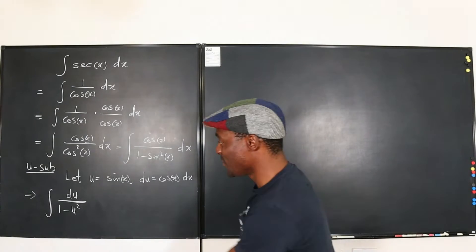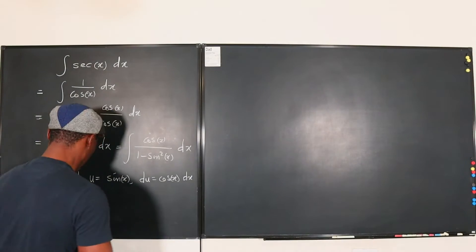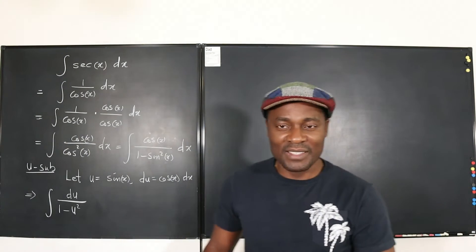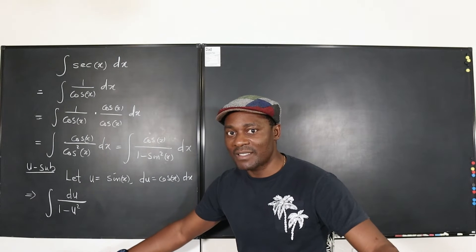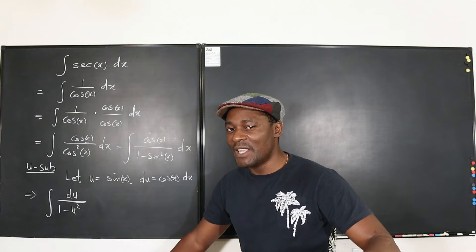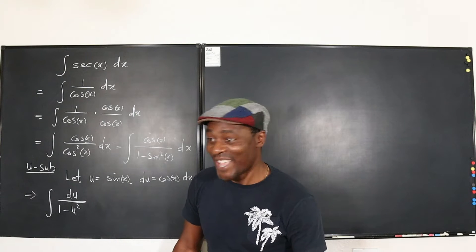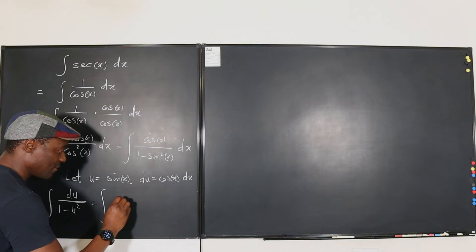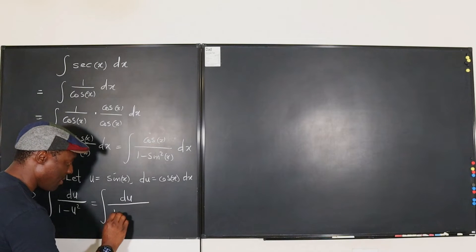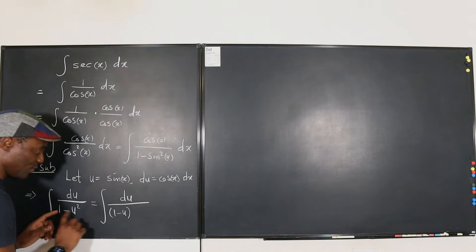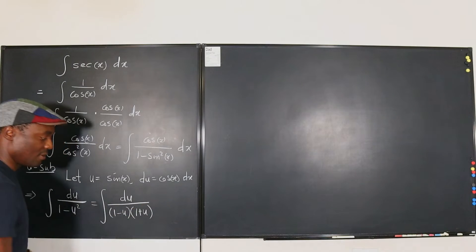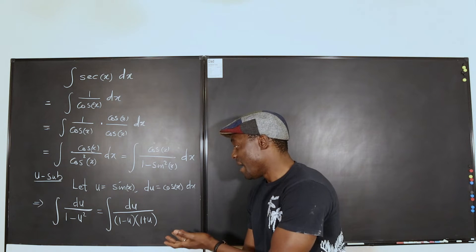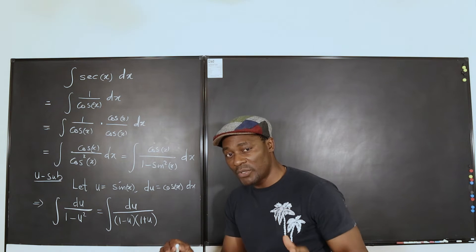Now it's getting easier. With this expression, when you see something like this, can you factor the denominator? Yes. If you can factor the denominator, you might need to do partial fractions from your pre-calculus class. We can say this is the same thing as the integral of du over (1 minus u)(1 plus u), since this is the difference of two squares. Now that we have this expression, we need to resolve it into partial fractions.